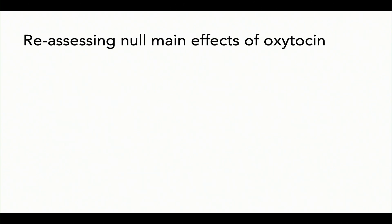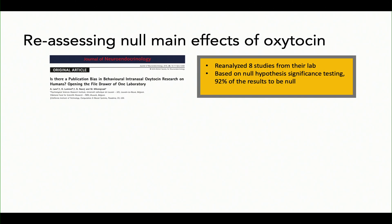Recently, Adam Teed, a postdoc in my lab, and I thought it was really interesting to look at a paper by Lane and colleagues that came out a couple years ago, where they re-looked at a whole bunch of studies they had conducted in their lab and reassessed them. What they found was that 92% of their results were null. They had pretty strong language and were like, maybe there's nothing here.